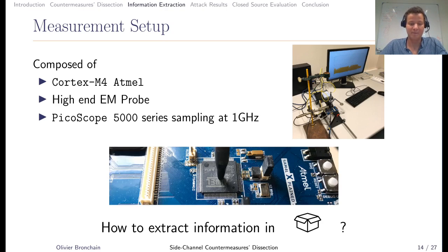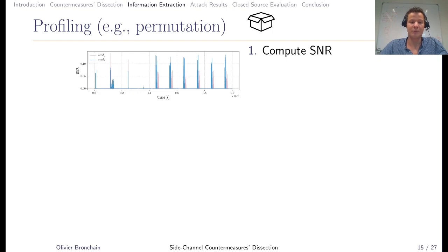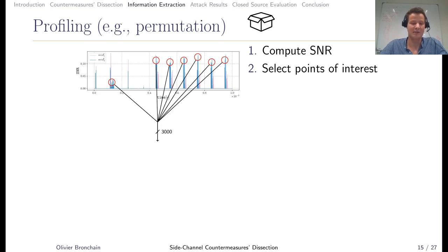I will illustrate that for the two-bit seed used to generate the mix column permutation. The first thing is to compute SNR. The x-axis is time, and the y-axis is SNR. It tells you where information is located about that seed. Based on that, you can select the point of interest that you will use during your attack, but maybe there are like 2,000 points. You would like to work with less dimension, so you train a projection that will reduce this amount. In this work, we use PCA, which is a profiled dimensionality reduction technique.